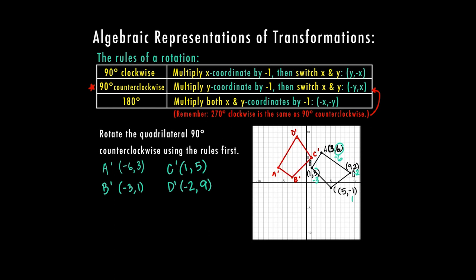Now that I've connected all my points, I can see that with the origin as my point of rotation, everything has moved to the next quadrant to the left because we're going counterclockwise. The y values multiply by negative 1, and then the x and y values switch places.